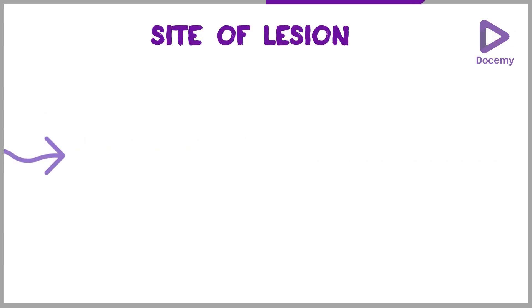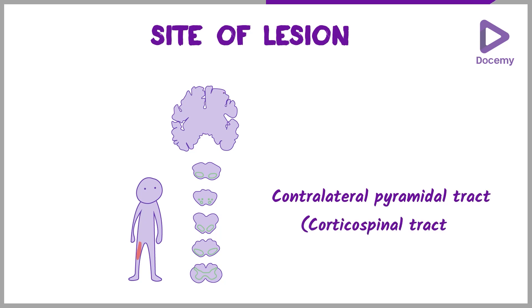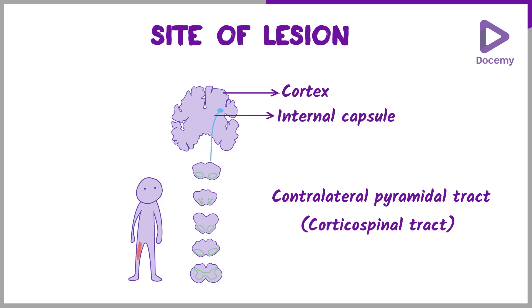In hemiplegia, the site of lesion is usually the contralateral pyramidal tract. The pyramidal tract is also known as the corticospinal tract; it arises from the cortex and comes down through the internal capsule to the opposite side of the body.